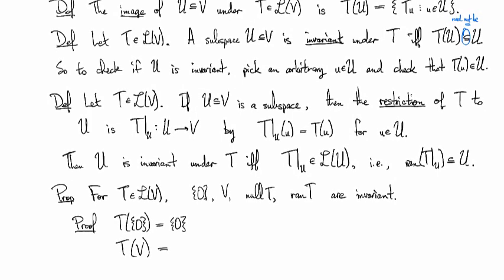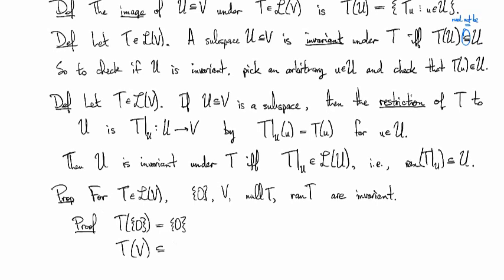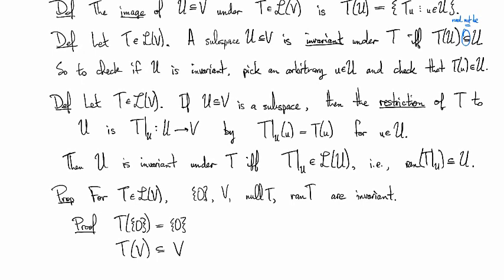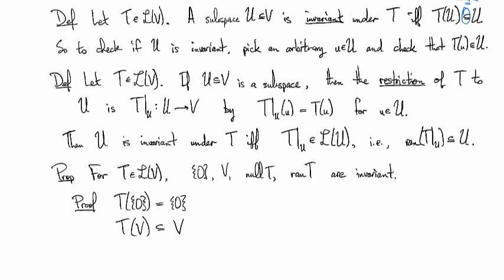And then, if I look at T of V, since the codomain is V, the range is going to be contained in the codomain. So that one's clear enough.